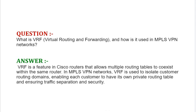Our next interview question is: What is VRF (Virtual Routing and Forwarding) and how is it used in MPLS VPN networks? Your answer should be: VRF is a feature in Cisco routers that allows multiple routing tables to co-exist within the same router. In MPLS VPN networks, VRF is used to isolate customer routing domains, enabling each customer to have its own private routing table and ensuring traffic separation and security.